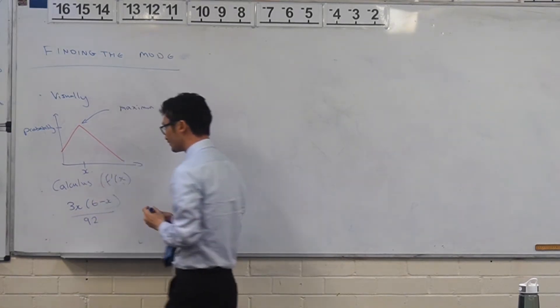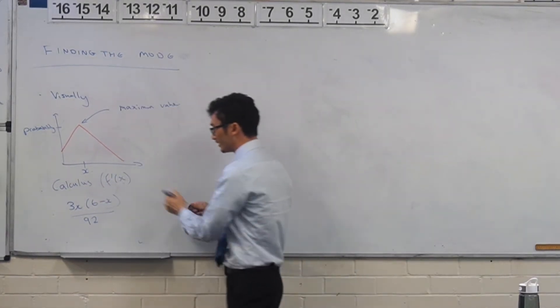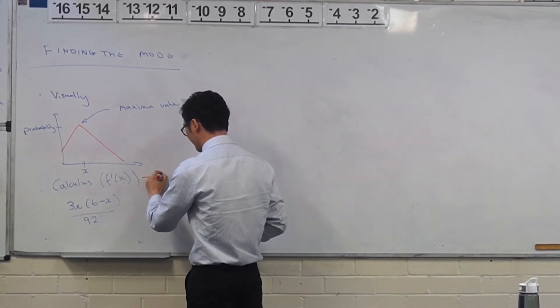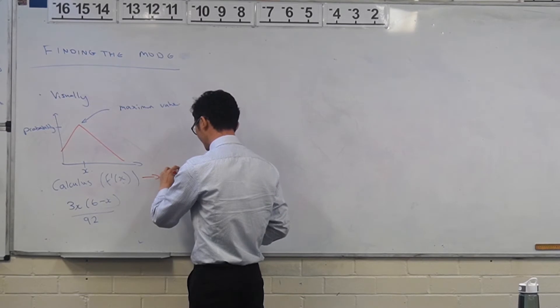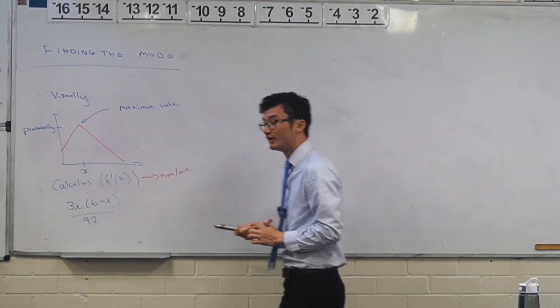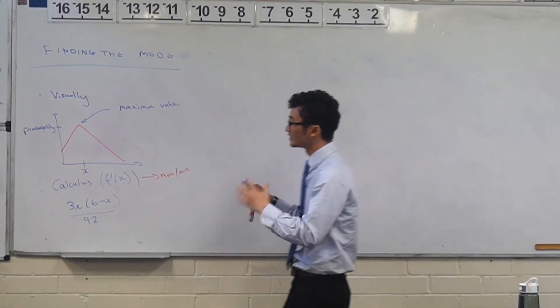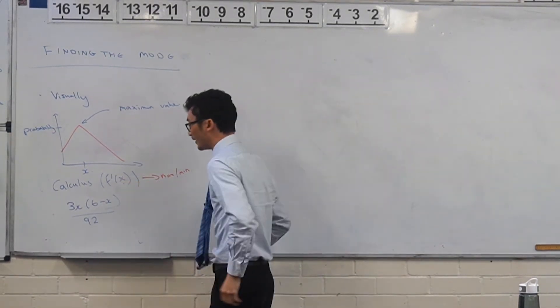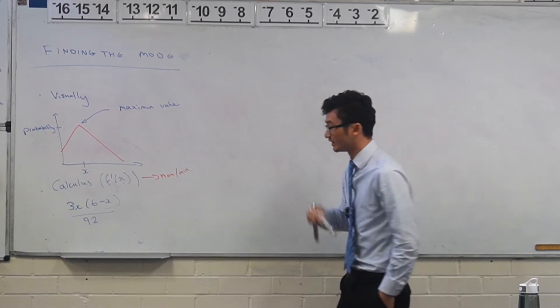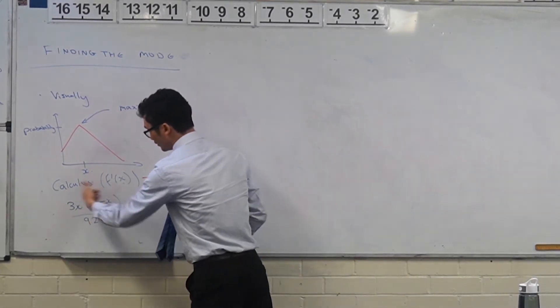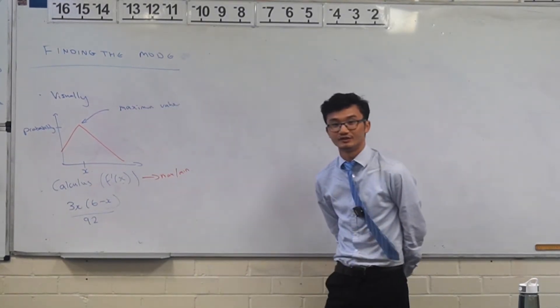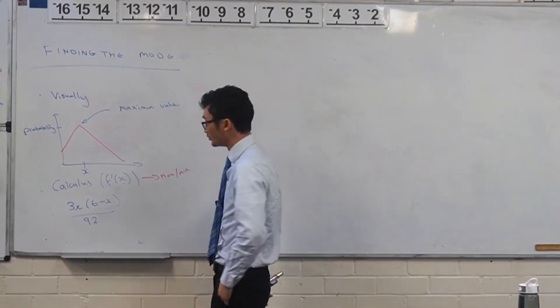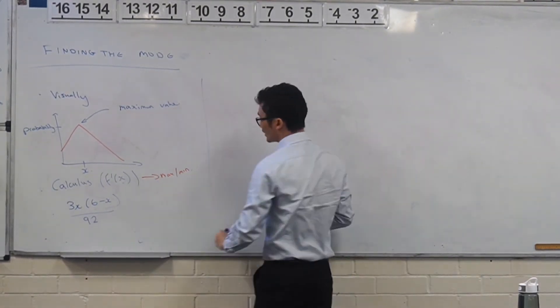Because when you've been using f dash of x, what does that allow you to find? It allows you to find maximum and minimums, right? So we can do that here as well - a maximum or minimum. So this is the second method. Visually they give us the graph, but if they give you an equation, an expression, then you need to utilize this. We need to find the highest point, and one of the ways you can do is with calculus.